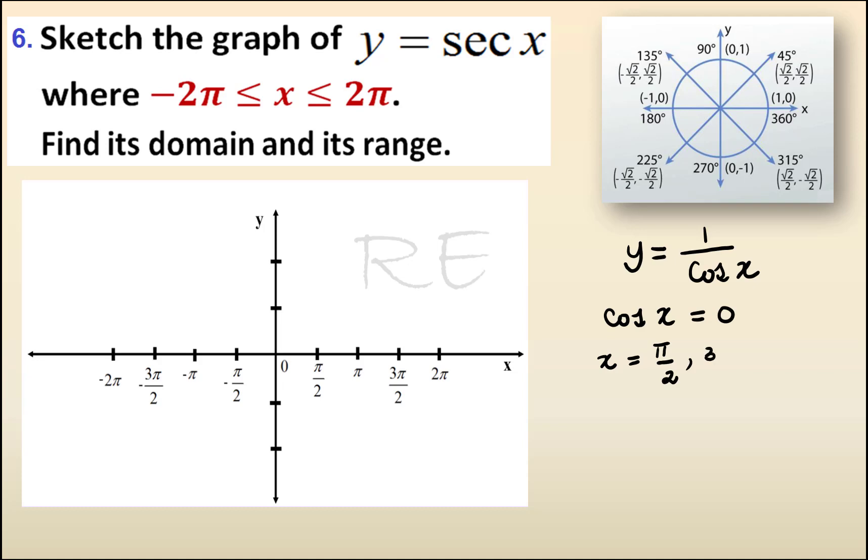Cosine is equal to 0 when x is equal to π/2, 3π/2, any odd multiple of π/2. So any x such that x equals (2k + 1) times π/2.